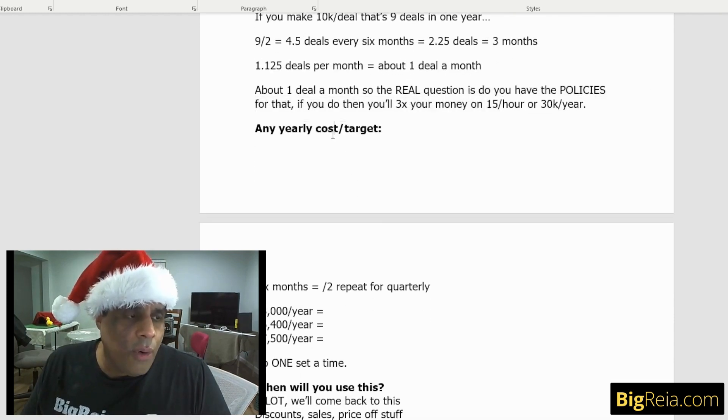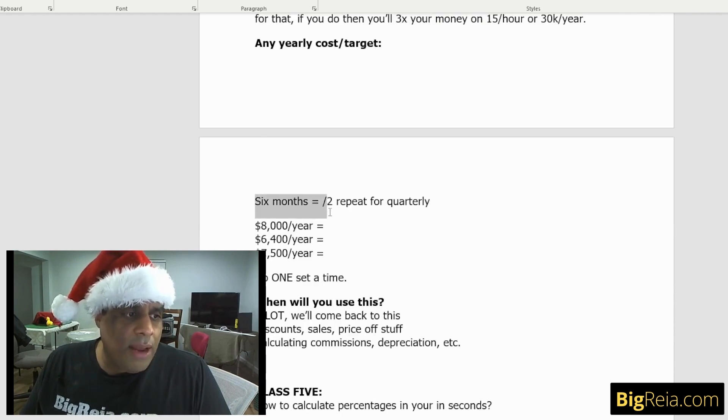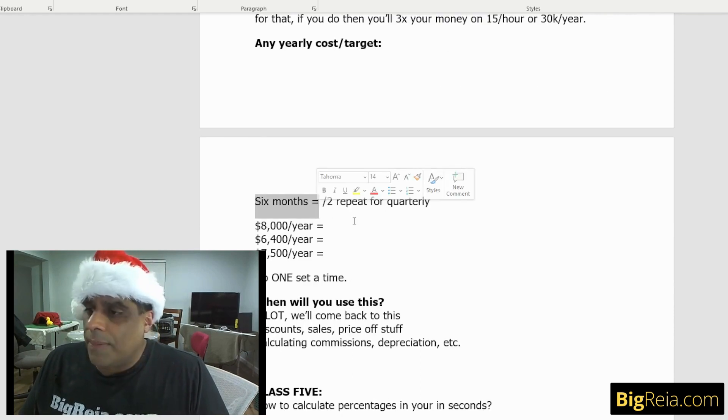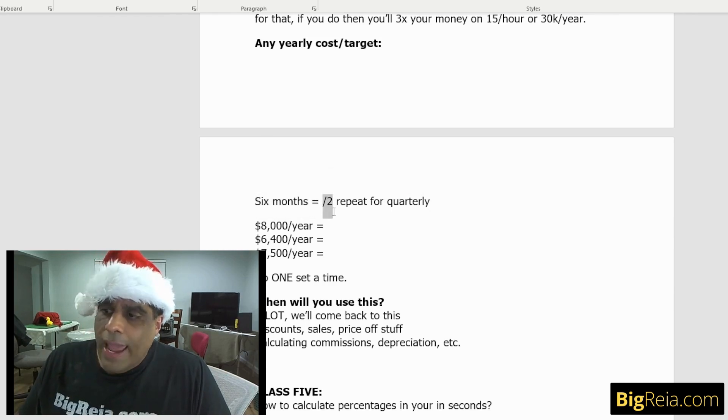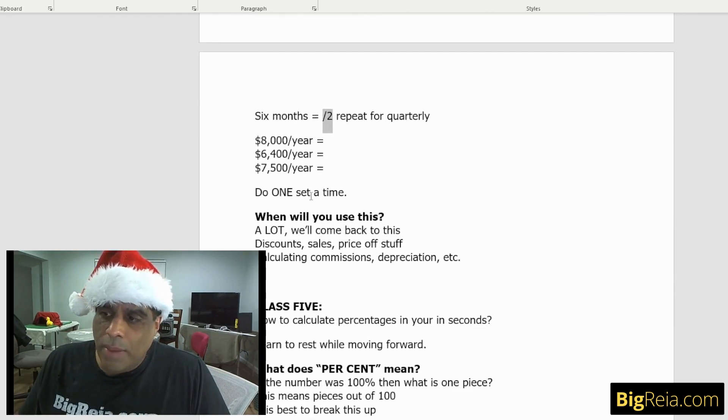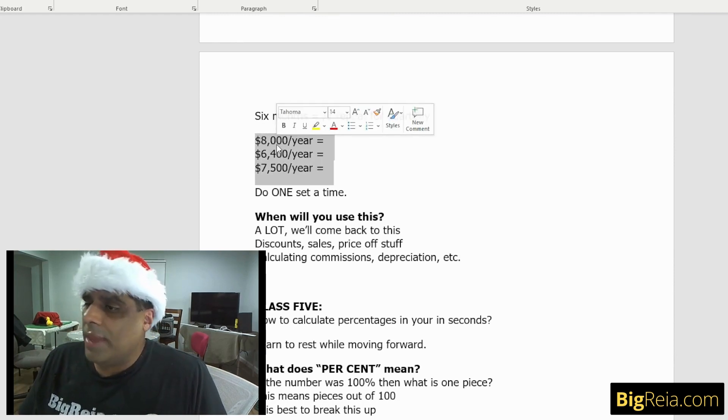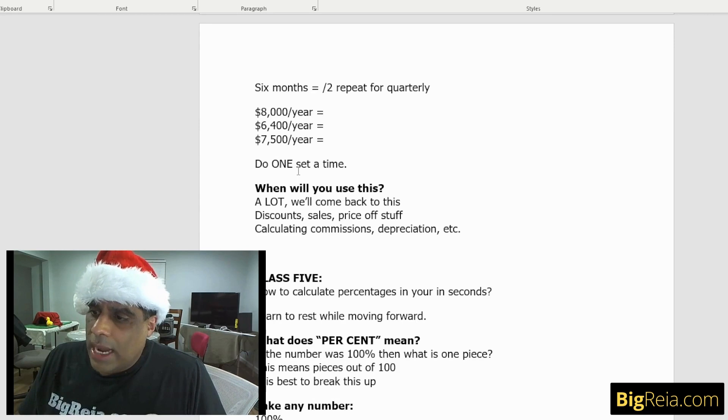Another use of this is for any yearly cost target. Let's say we want to figure out if we know how much something is per year, just divide that by two. That's how much it's going to cost every six months and divide that again by two and you'll get how much you want to make quarterly. So if something costs you $8,000 a year, that's $4,000 every six months or $2,000 every quarter. Do one at a time. When are you going to use this? Use this a lot.